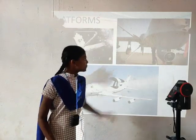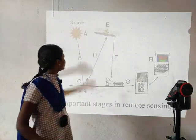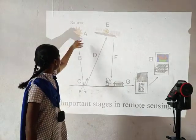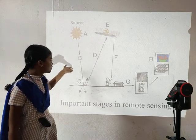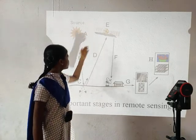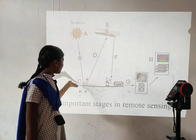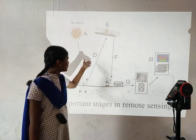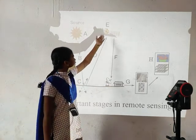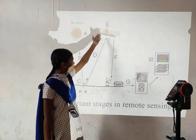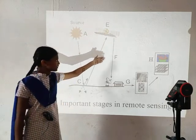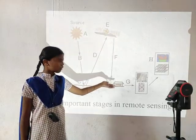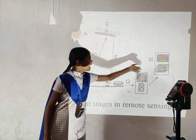Main stages in remote sensing are: A) emission of electromagnetic radiation, example the sun or an EMR source located on a platform; B) transmission of energy from the source to the object; C) interaction of EMR with the object and subsequent reflection and emission; D) transmission of energy from the object to the sensor; E) energy recorded by the sensor, example photographic or non-photographic sensor; F) recorded information transmitted to the ground station; G) processing of the data into digital or hard copy image; H) analysis of data.